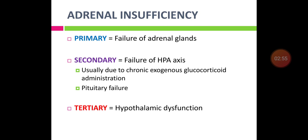In secondary adrenal insufficiency, there is failure of the hypothalamo-pituitary-adrenal axis or pituitary gland, often due to chronic exogenous glucocorticoid administration. Pituitary failure may be due to pituitary gland necrosis or surgical removal of the gland. Tertiary adrenal insufficiency is where the pathology lies in the hypothalamus — hypothalamic dysfunction.